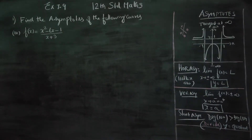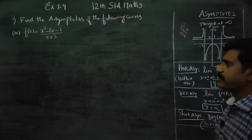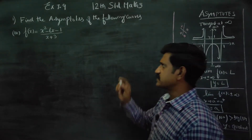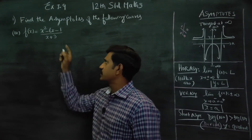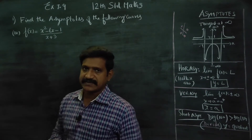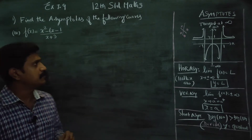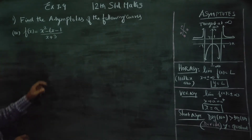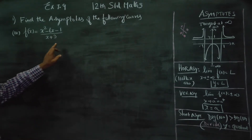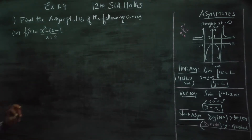Dear 12th standard students, in exercise number 7.9, find the asymptotes of the following curve: f(x) is equal to x squared minus 6x minus 1, divided by x plus 3.